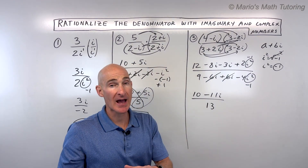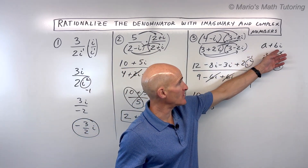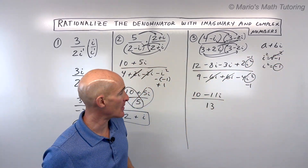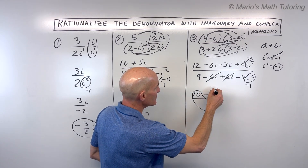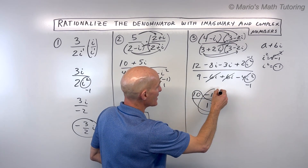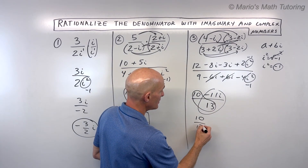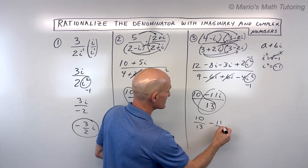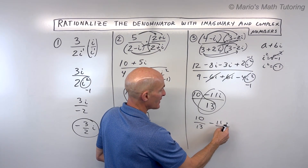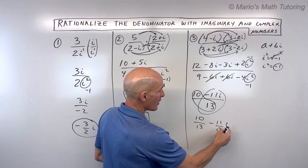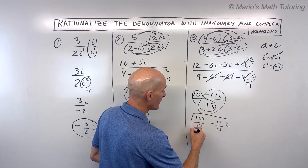So i squared is negative one: two times negative one is negative two, plus twelve is ten. Negative eight i minus three i is negative eleven i. In the denominator, the negative six i and positive six i cancel; negative four i squared becomes positive four, plus nine is thirteen. Now rewrite in a plus bi standard form by splitting into two fractions: ten thirteenths minus eleven thirteenths i. That's your final result — you can put the i in the numerator, you just don't want it in the denominator.